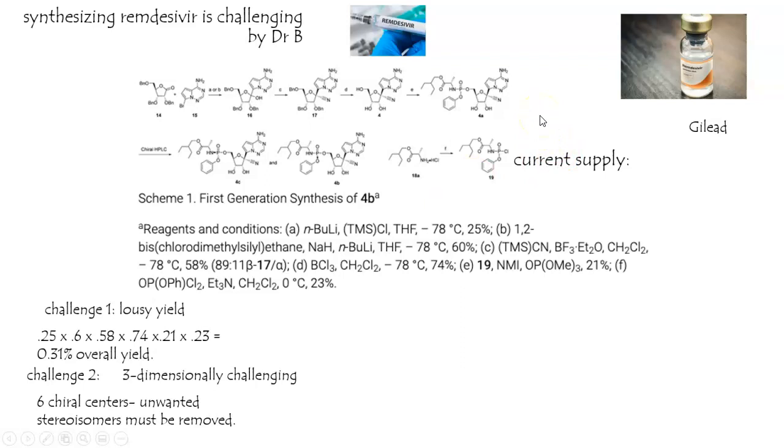The current supply, according to Gilead, is that they have currently enough for 140,000 courses. Now, this information is a little bit dated. They've probably doled that out already. That's not just 140,000 injections. That's 140,000 courses, each of which consists of a 10-day worth of injections.